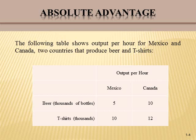In order to know which of the two countries is enjoying an absolute advantage in the production of beer and t-shirts, let's start with beer. Mexico is producing 5,000 bottles of beer, whereas Canada is producing 10,000. Canada is producing more beer than Mexico — 10,000 is greater than 5,000 — so Canada is enjoying an absolute advantage in the production of beer.